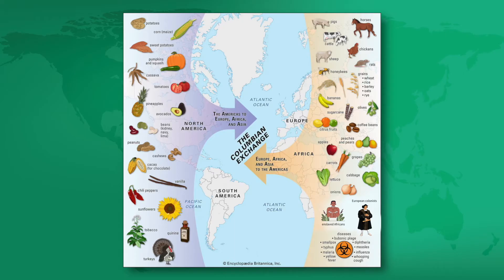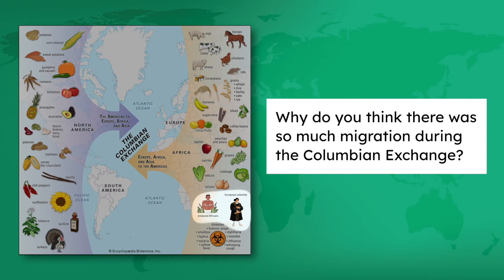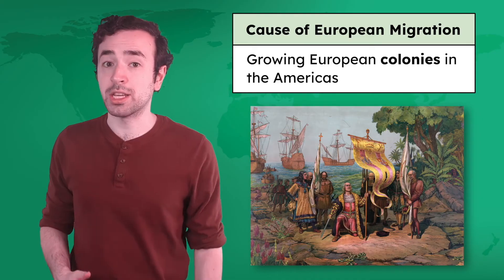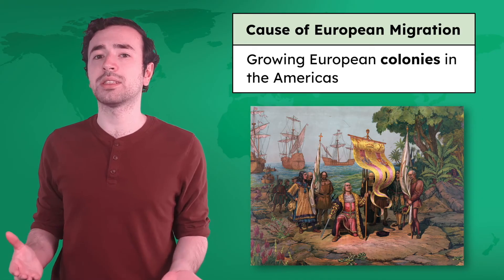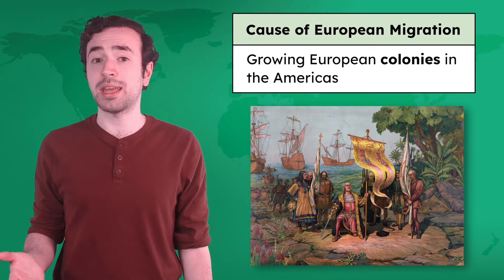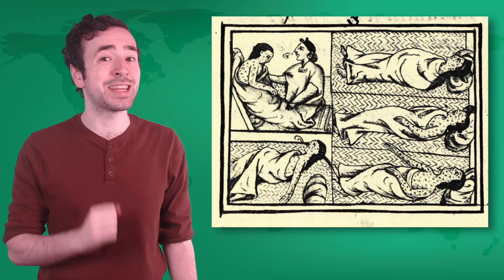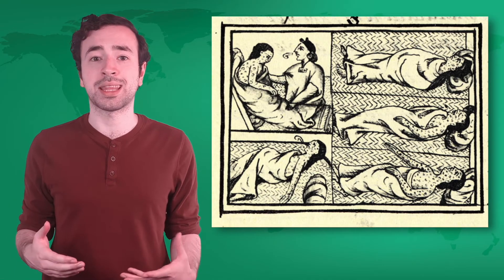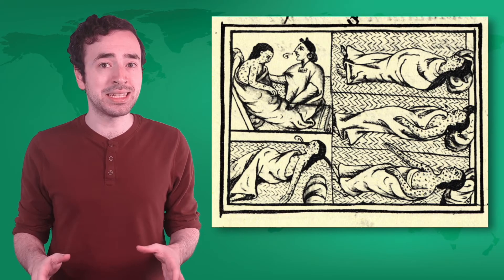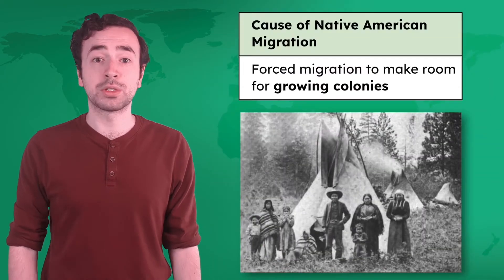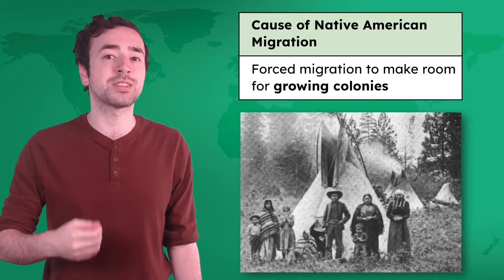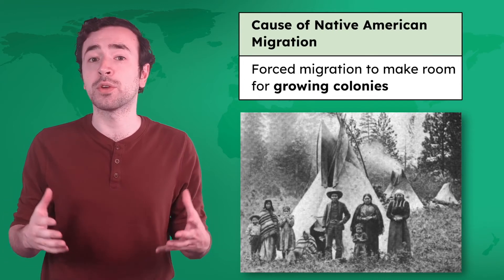Meanwhile, the migration of people changed the demographic makeup of the Americas forever. European populations grew in the Americas as colonists from countries like England, France, and Spain migrated to populate growing colonies. But Native American populations declined significantly — European colonists brought diseases like smallpox that killed an estimated 90% of Native Americans. Those that remained fought to defend their sovereignty, but colonists forced Native Americans to migrate to make room for their growing colonies.